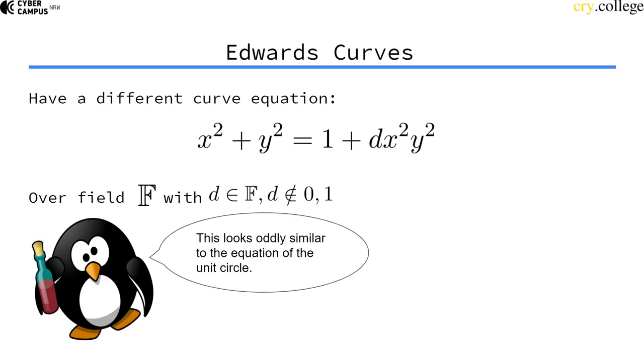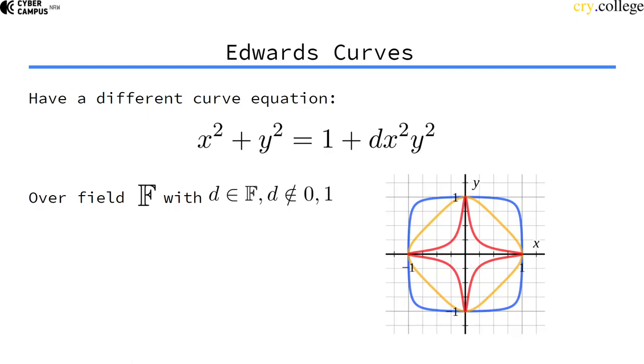So, maybe if you look at this for the first time, you think, okay, x squared plus y squared equals 1. This seems oddly familiar. This looks like a unit circle, right? And if you plot curves like that, they actually seem very similar to the unit circle.